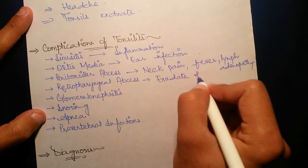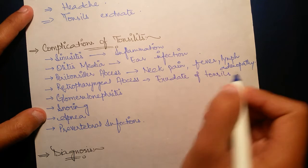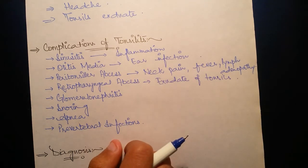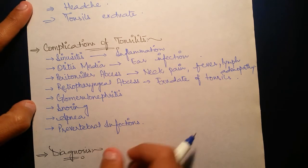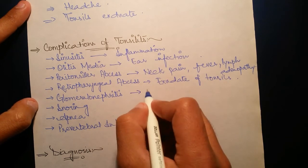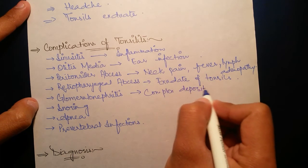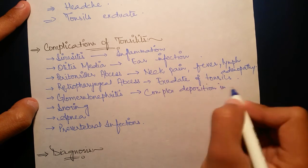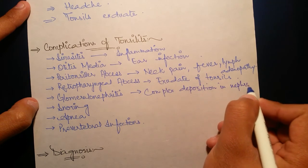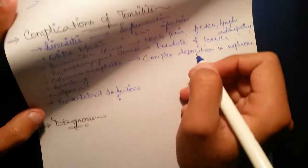Glomerulonephritis arises from the viral tonsillitis due to antibody formations which form immune complexes, and these complexes are deposited in the nephrons, related to chronic glomerulonephritis. Snoring is like the sound produced during sleep.